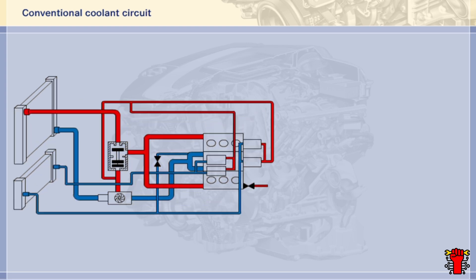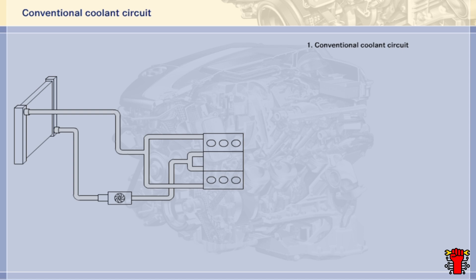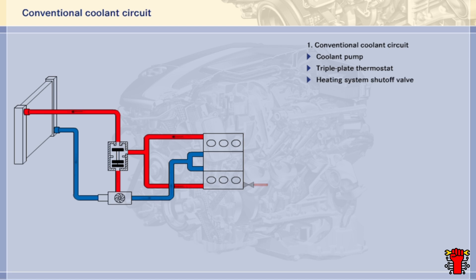The cooling system on the DE is somewhat more complex than on the KE. Let's start with the conventional coolant circuit as found on the KE engine. The heated coolant flows from the engine to the radiator where it is cooled. The coolant is pumped back to the engine by the coolant pump. The triple plate thermostat ensures precise heat management. Depending on requirements, the heating system can be connected to or disconnected from the coolant circuit via a shutoff valve.